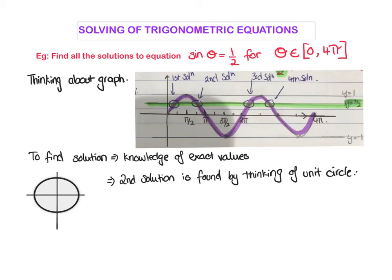Today we're going to look at solving trigonometric equations. In this first example, it says find all the solutions for when sine of an angle equals a half. So you're trying to find what angle gives a half. The problem states that the angle is an element between zero and four pi, so we have to find all answers that occur between zero and four pi.